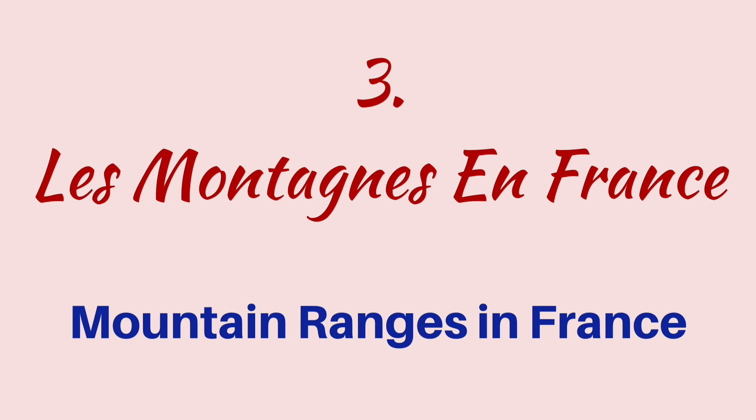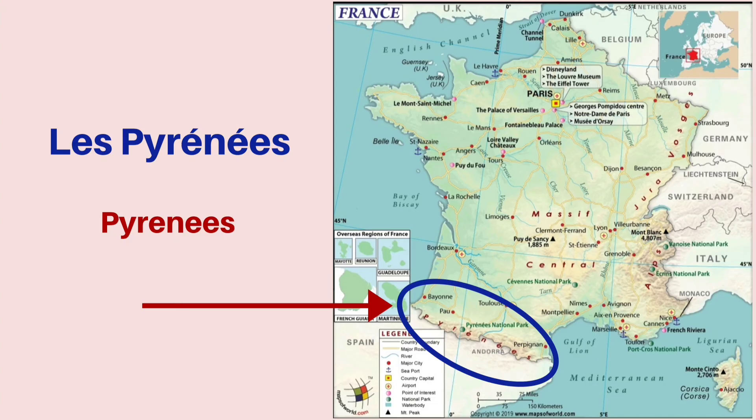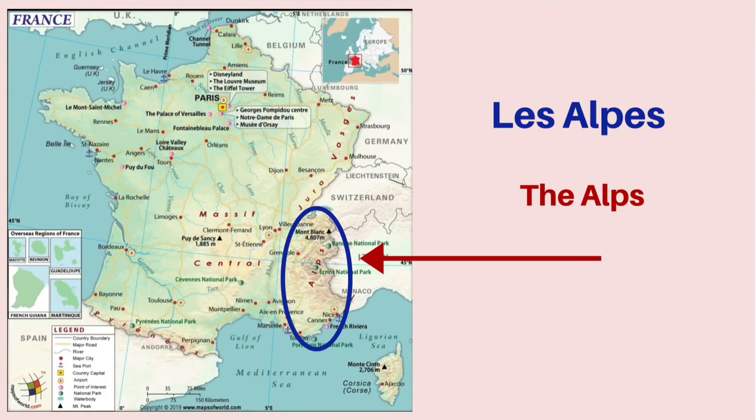Next up, we are going to see the mountain ranges in France — les montagnes en France. Just at the boundary with Spain, you have the Pyrenees, which is called les Pyrénées in French. Next up, you have les Alpes, the Alps, which form the border with neighboring countries.